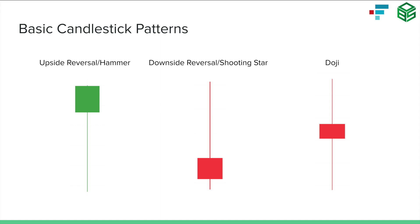In the middle you can see the opposite — a downside reversal, also known as a shooting star. This was a day where prices were increasing to a fairly large degree, until prices were high enough that sellers decided to get out. The sellers overpowered the buyers to the point where the stock reversed all the way down to close red for the day. This is an indication that buyers have gotten tired and sellers have overpowered them, meaning we'd likely see continued selling in the near future.